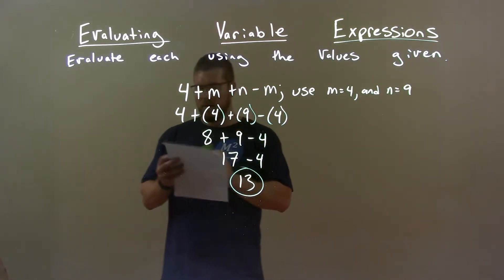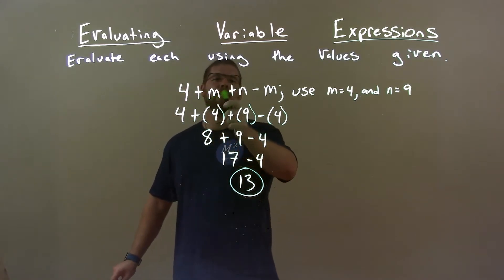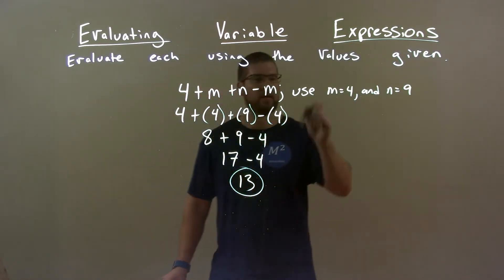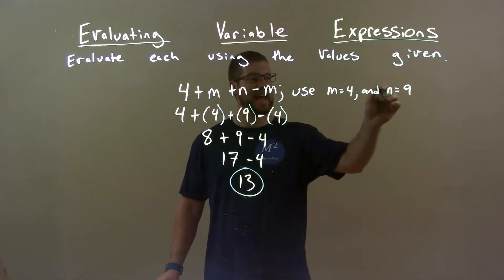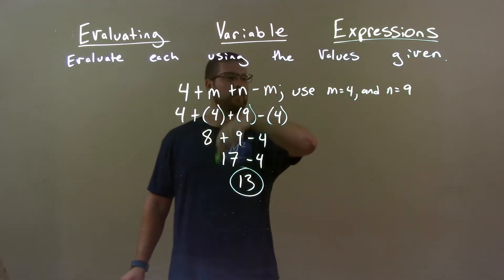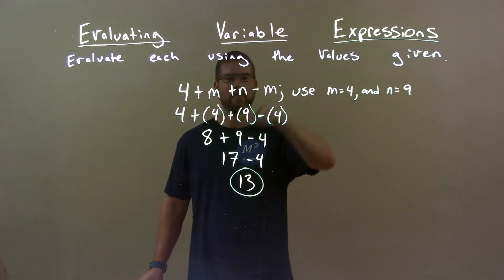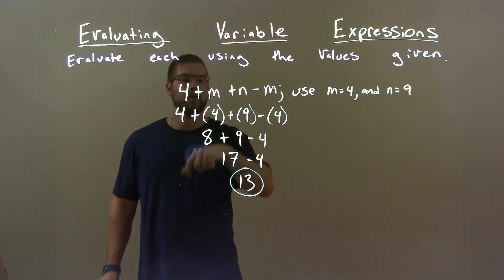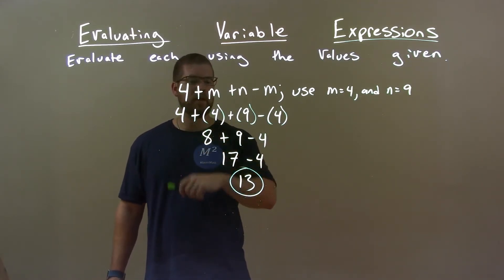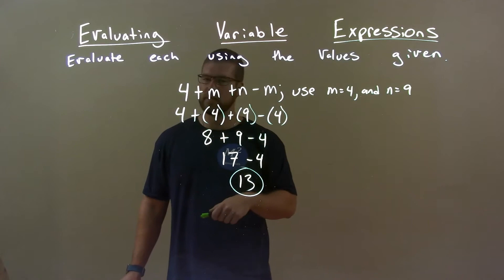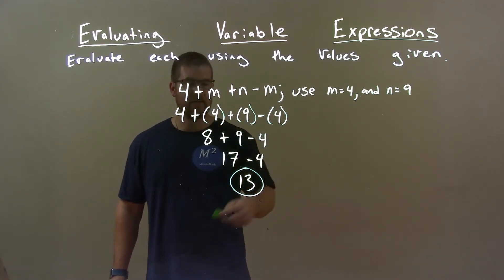Quick recap, we're given 4 plus m plus n minus m and we're using m to be 4 and n to be 9. Substitute them in, 4 for m, 9 for n. Then we simplify. 4 plus 4 is 8 plus 9 was 17, subtract 4 was 13. So again, final answer.